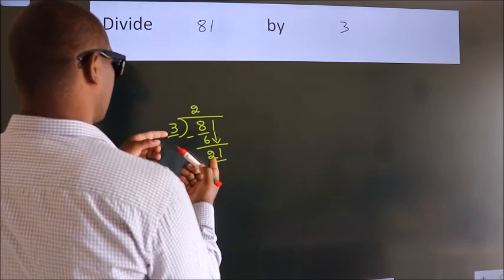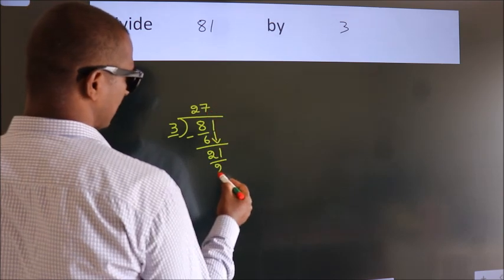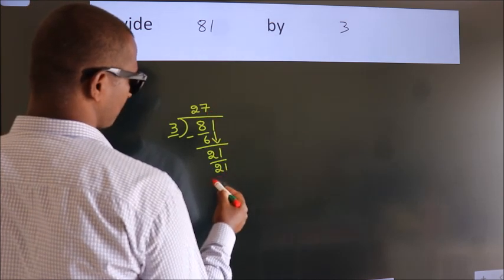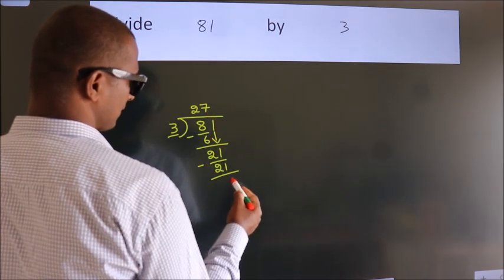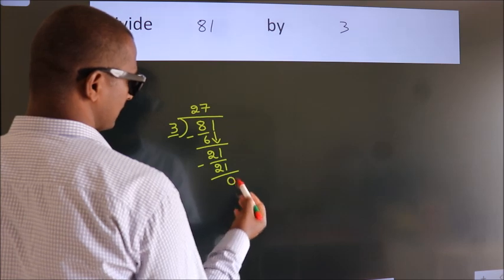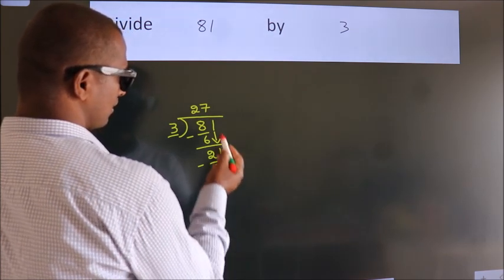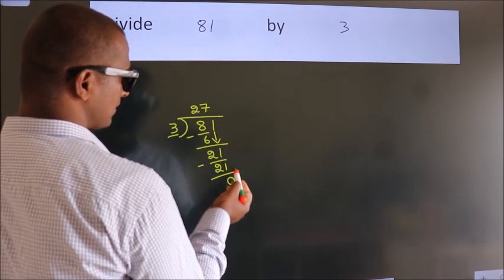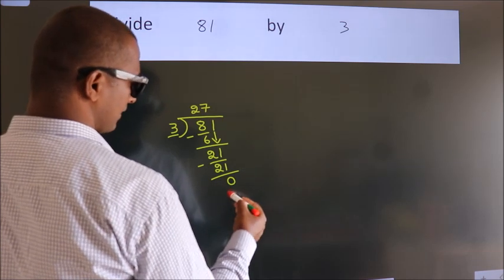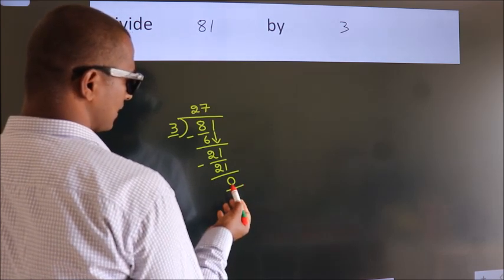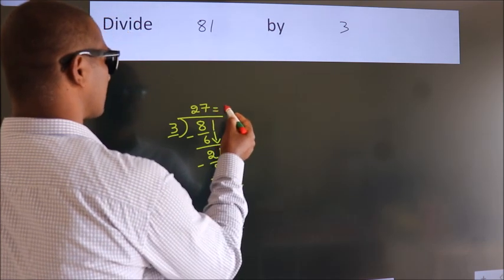In the 3 times table, 3 sevens is 21. Now we subtract, we get 0. After this, no more numbers to bring down, and we got remainder 0. So this is our quotient.